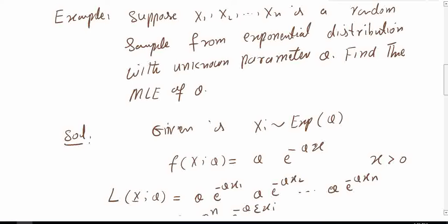In this video tutorial I will explain how we can find maximum likelihood estimation with unknown parameter theta. In the previous video tutorial we explained what the maximum likelihood estimate is and how we can calculate it. There is a two-step procedure which we explained theoretically, and now I will explain this with given data. Suppose we have data x1, x2, up to xn from an exponential distribution with unknown parameter theta. Find the MLE of theta.